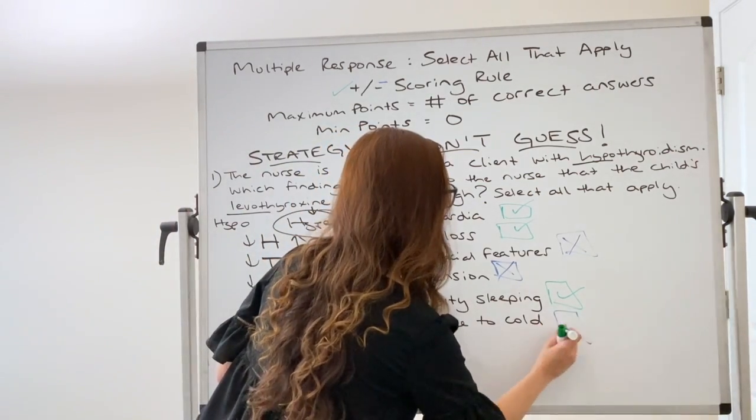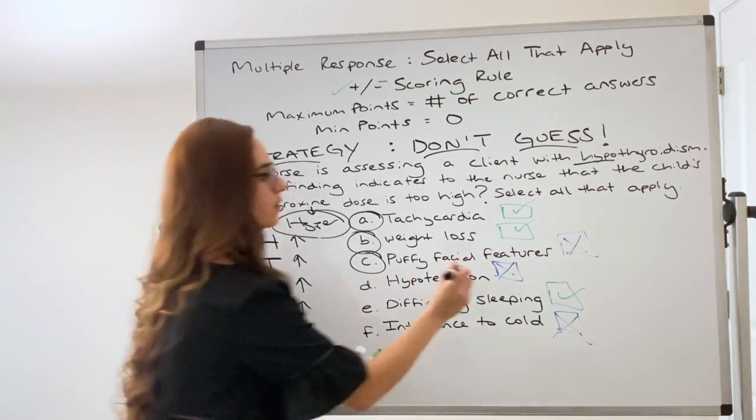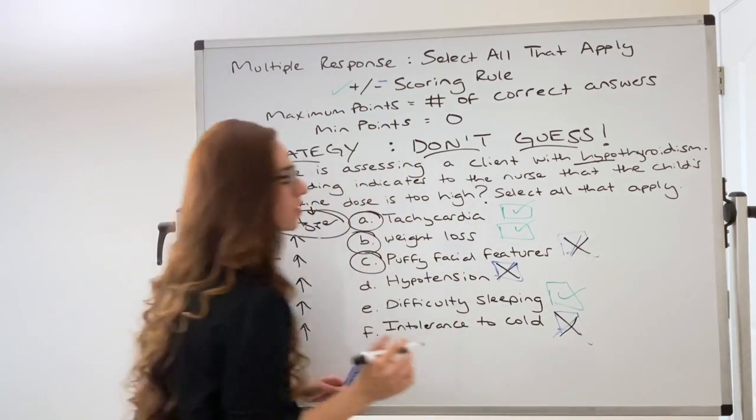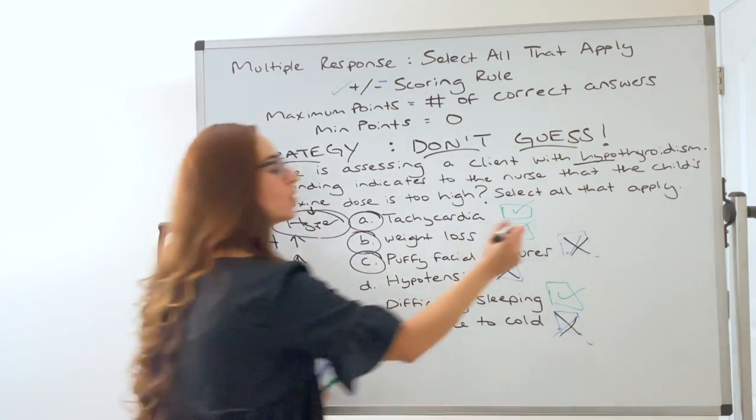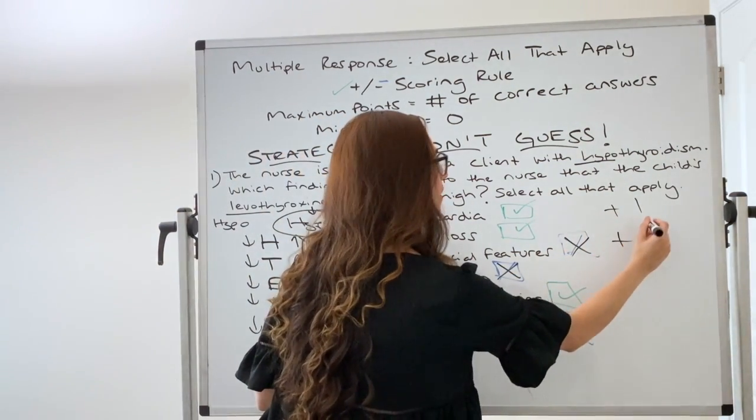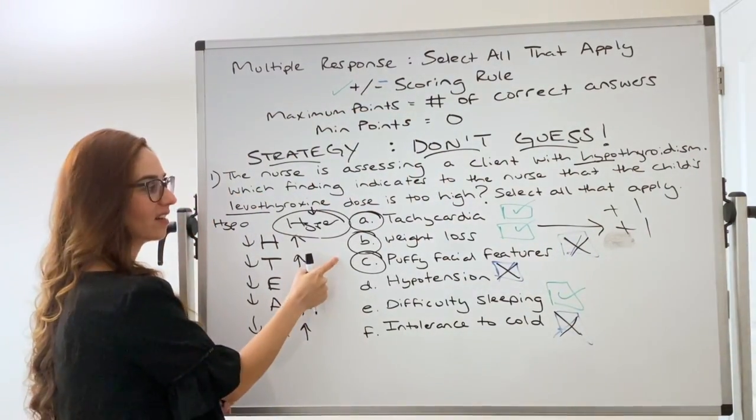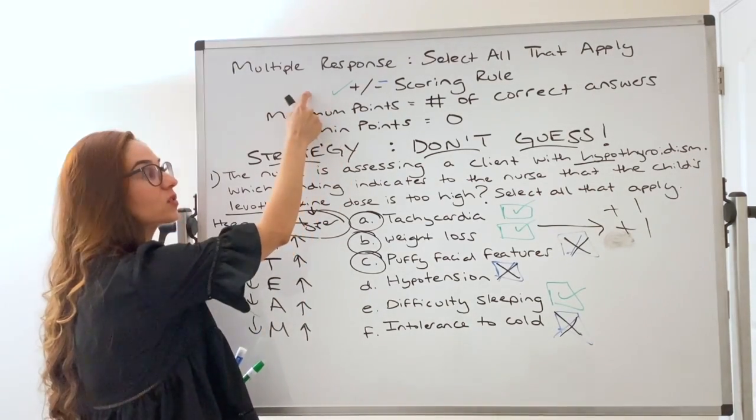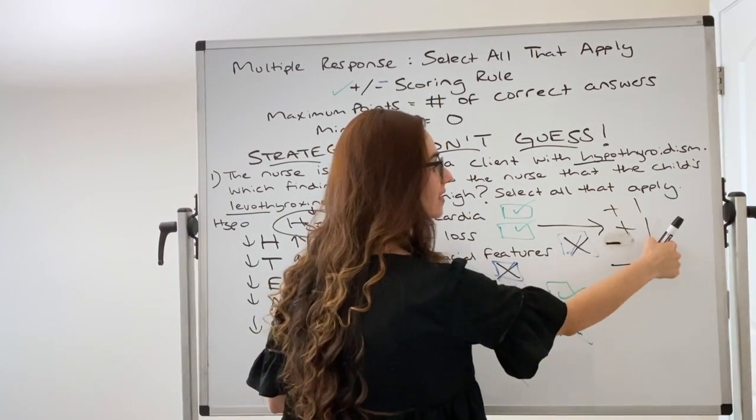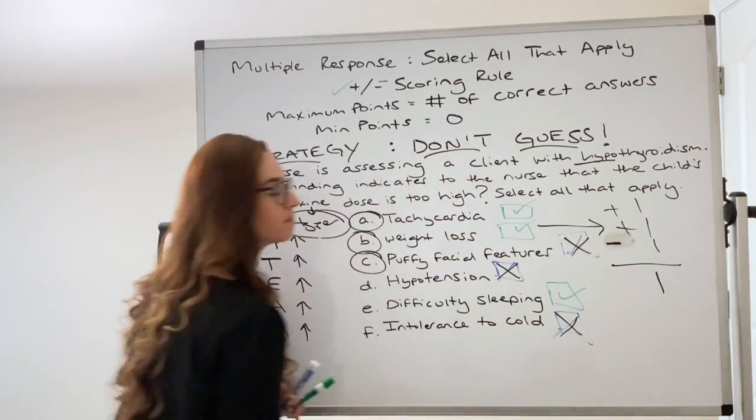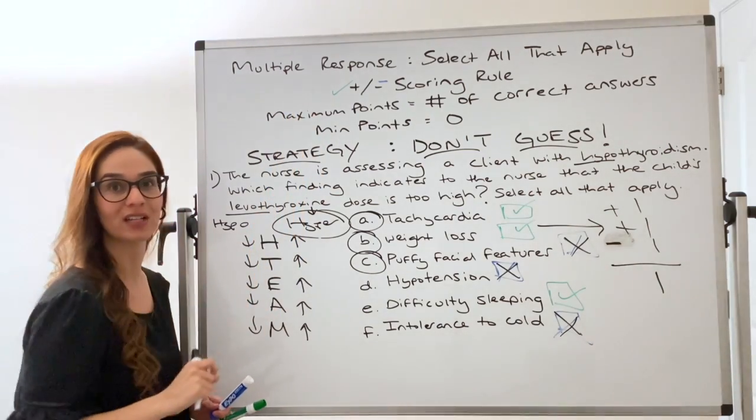So look at this. So this was wrong, this was wrong, this was wrong. So let's calculate our points. Remember when I took this question I absolutely knew these two were right. So I got plus one point for that one, plus one point for this second one right here. But I just guessed on this. I guessed on it. So remember with this scoring model I lose a point. So when I could have gotten two points without guessing I actually only got one point.